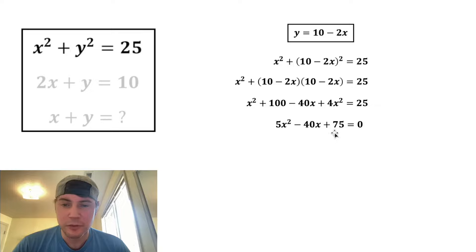From here, all three of these terms are divisible by five, so let's divide both sides by five. Each of these terms will divide by five to give us x squared minus 8x plus 15, and it's still equal to zero.